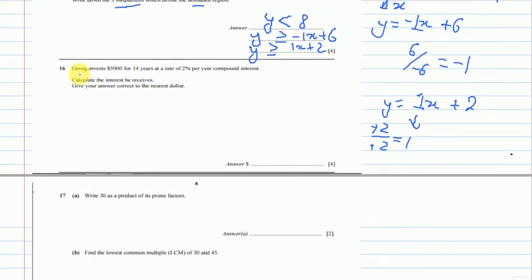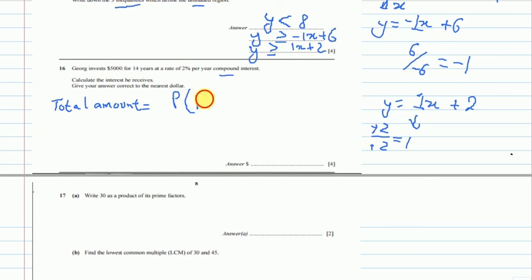Now question 16 is about compound interest. The formula is: total amount = principal × (1 + rate)^n, where n is the number of periods. Substituting the values: the principal invested is 5000, the rate is 2% which is 0.02, and n is 14 years. So we get 5000 × (1 + 0.02)^14.